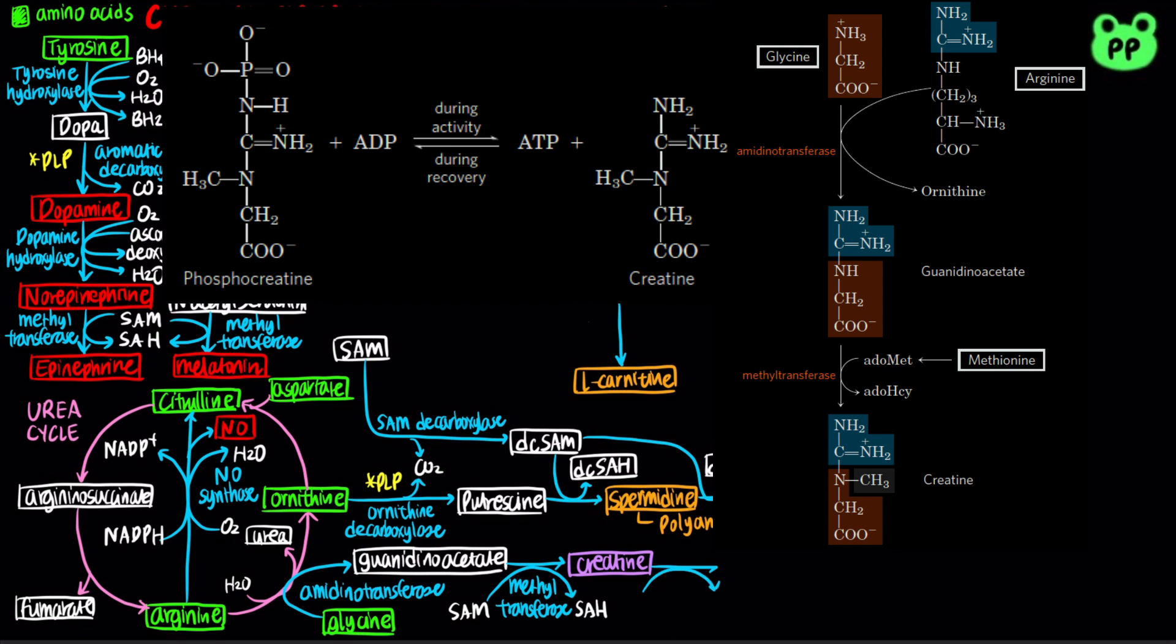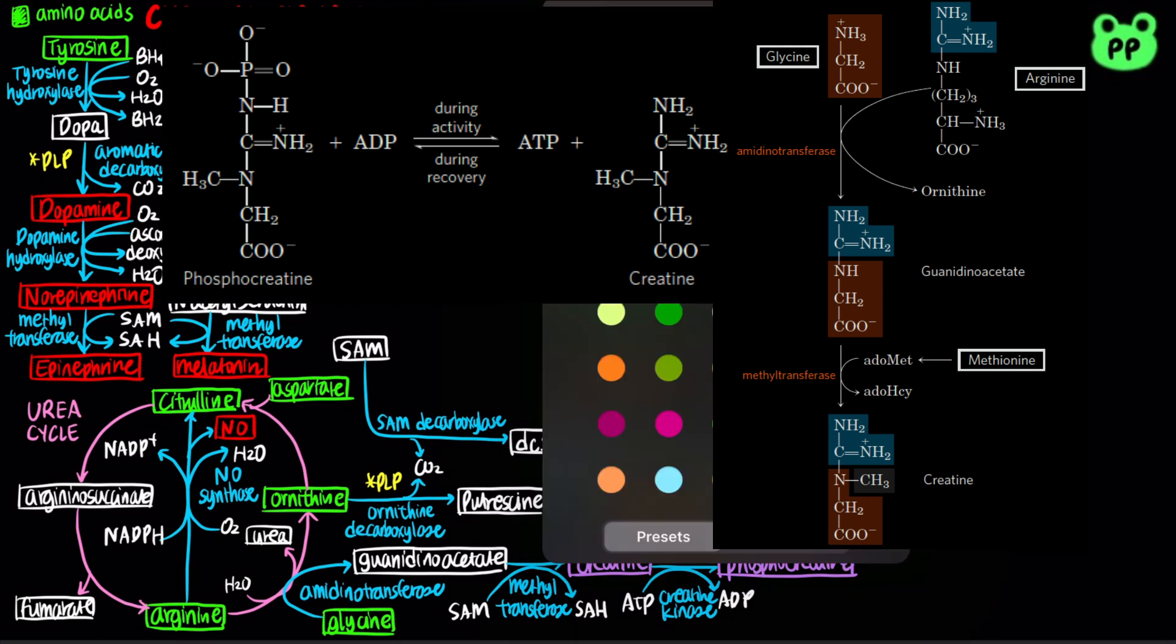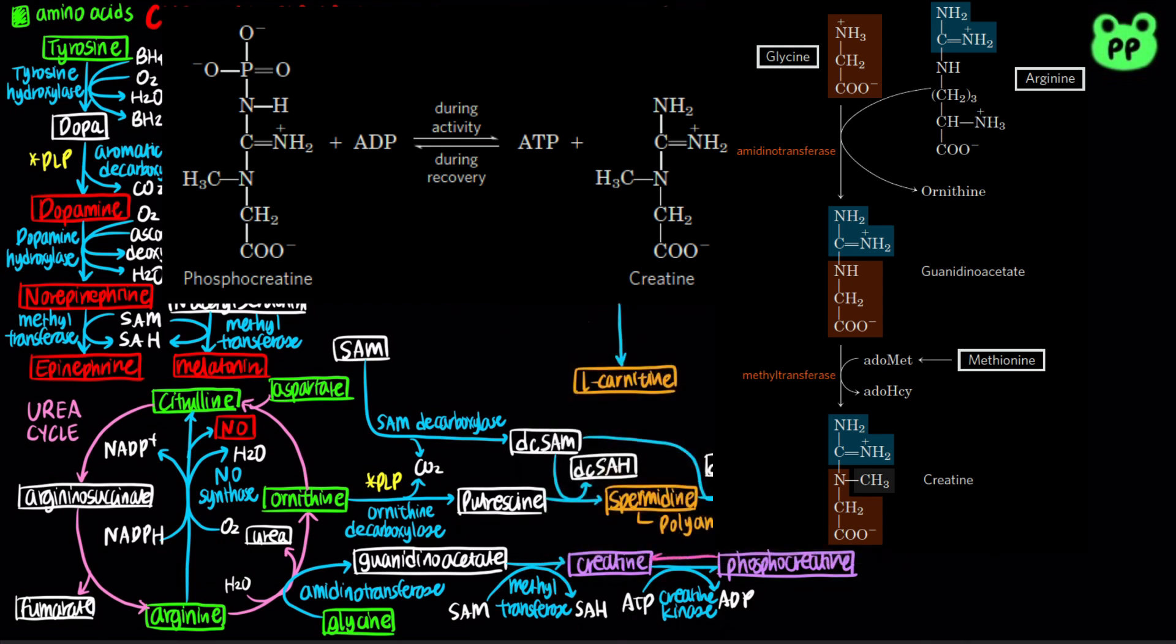At rest, muscle tissues can store excess ATP in creatine by converting it to phosphocreatine, catalyzed by creatine kinase. During bursts of heavy activity, the same enzyme regenerates ATP from ADP by converting phosphocreatine to creatine.